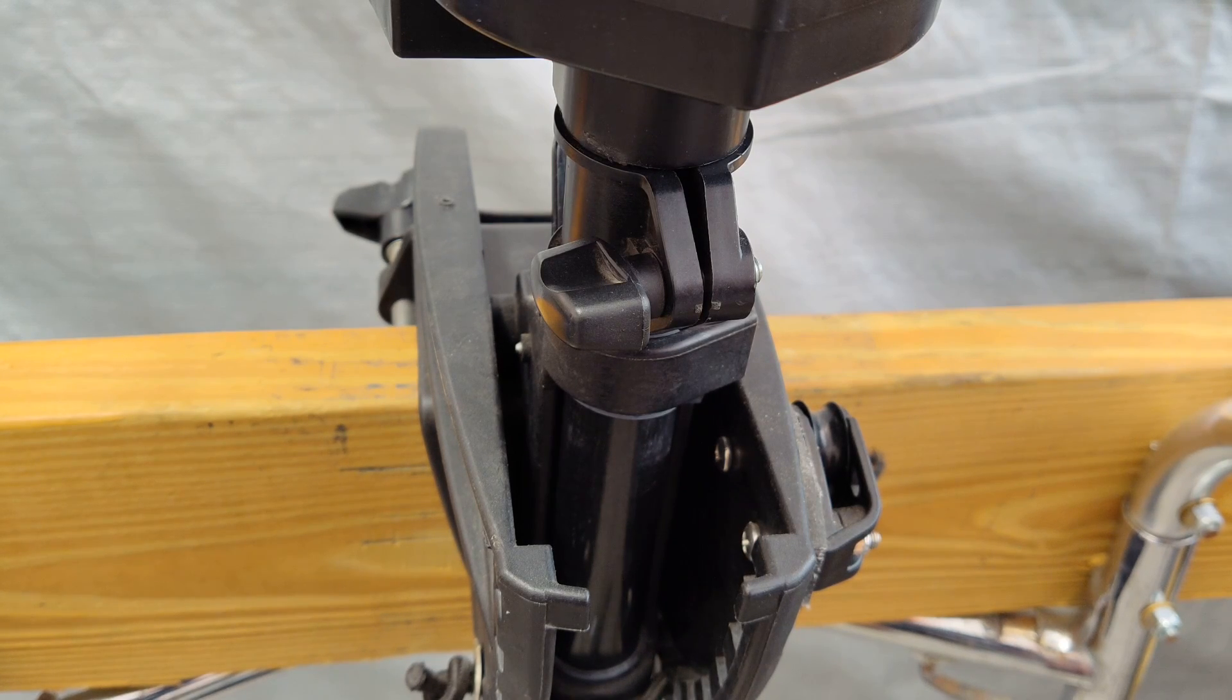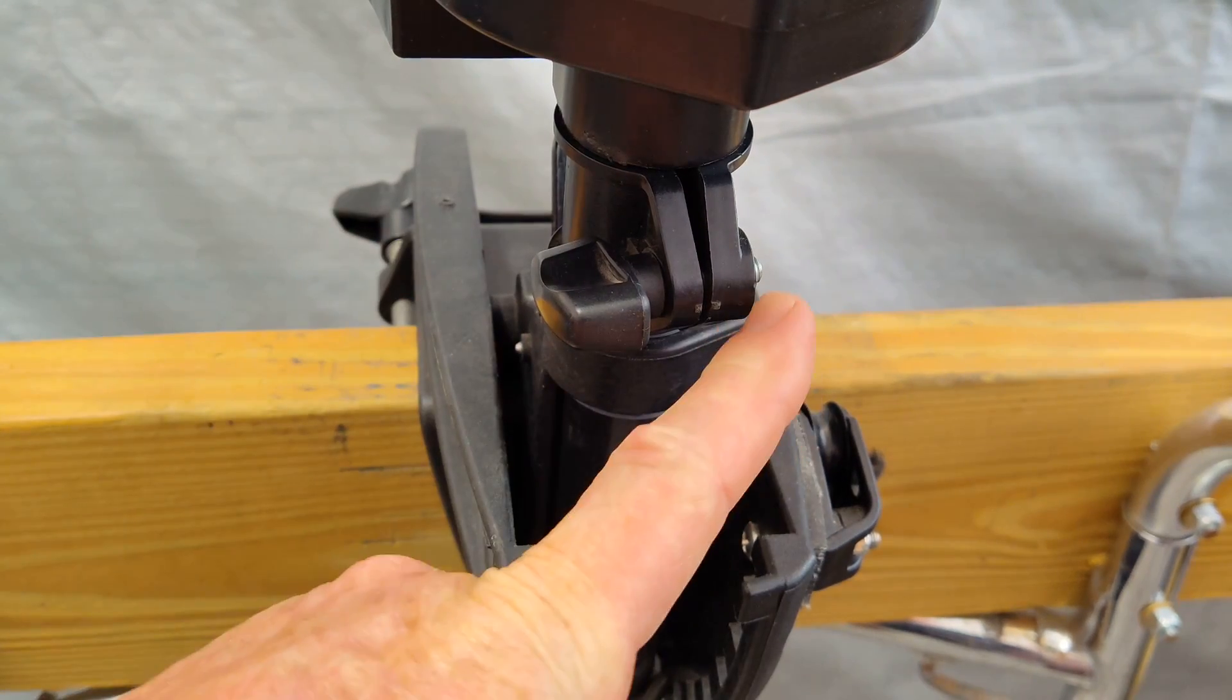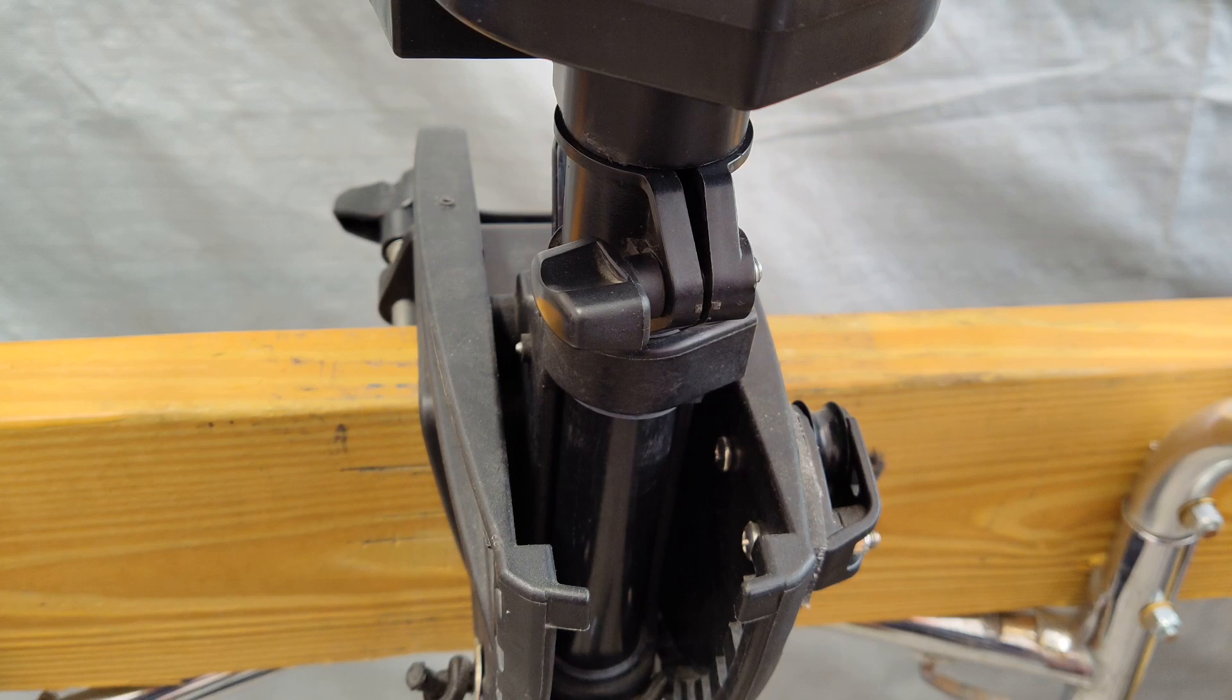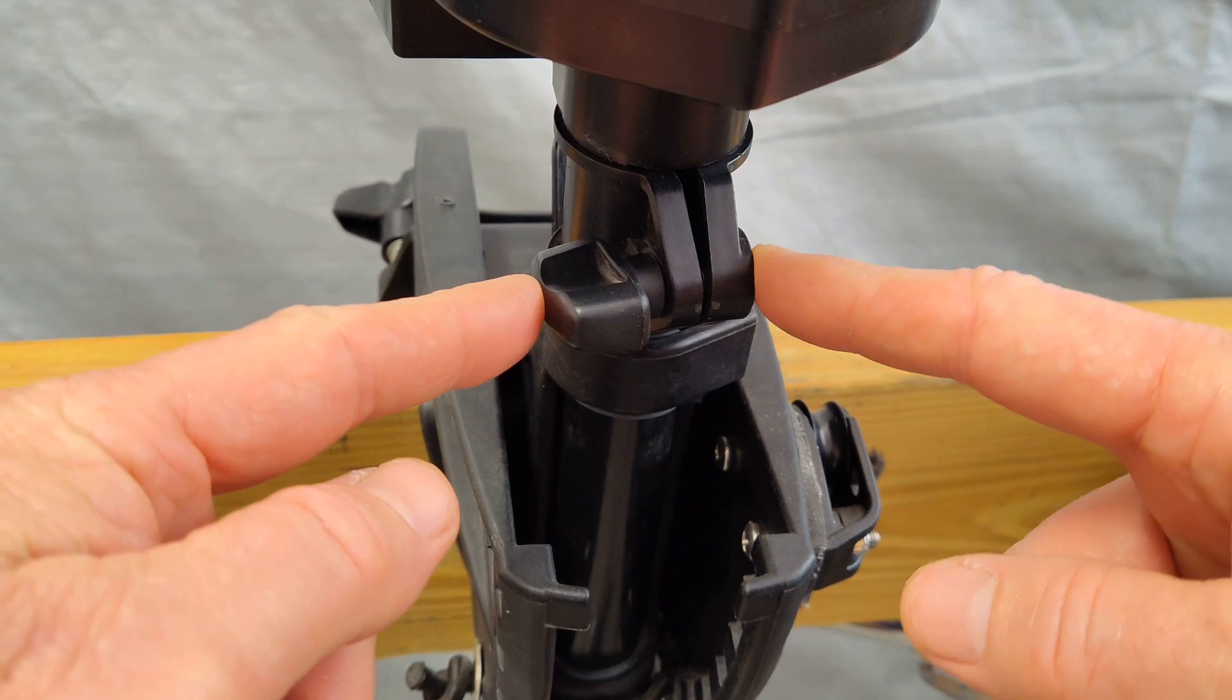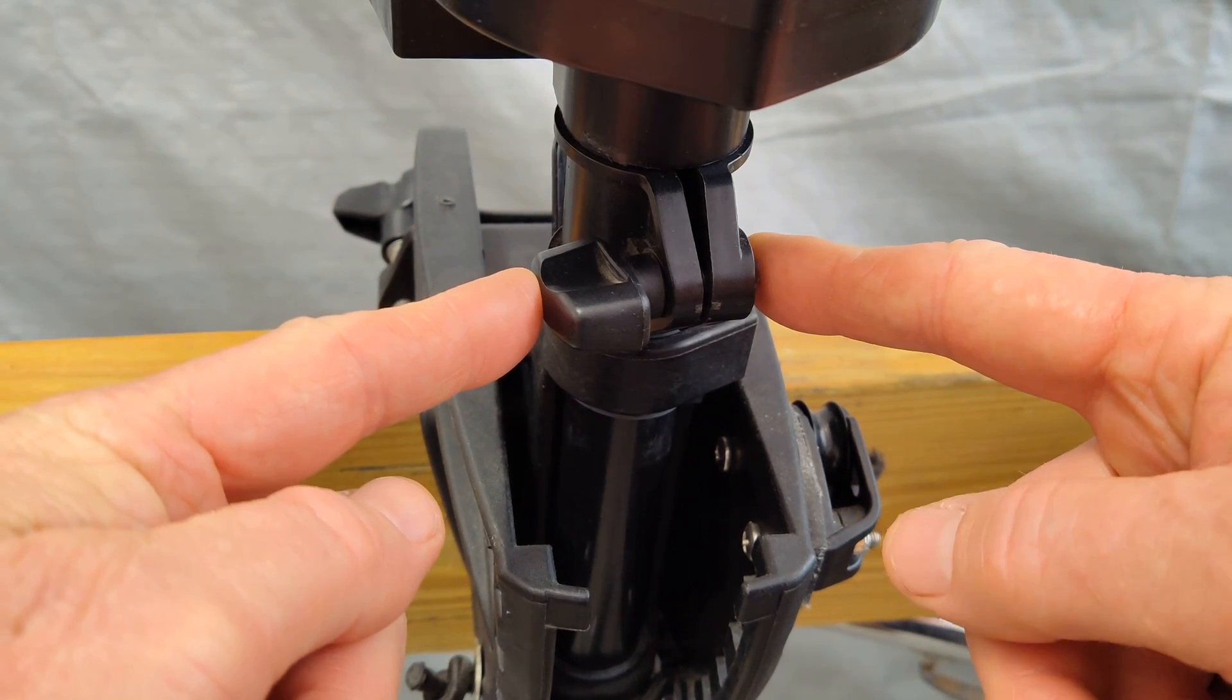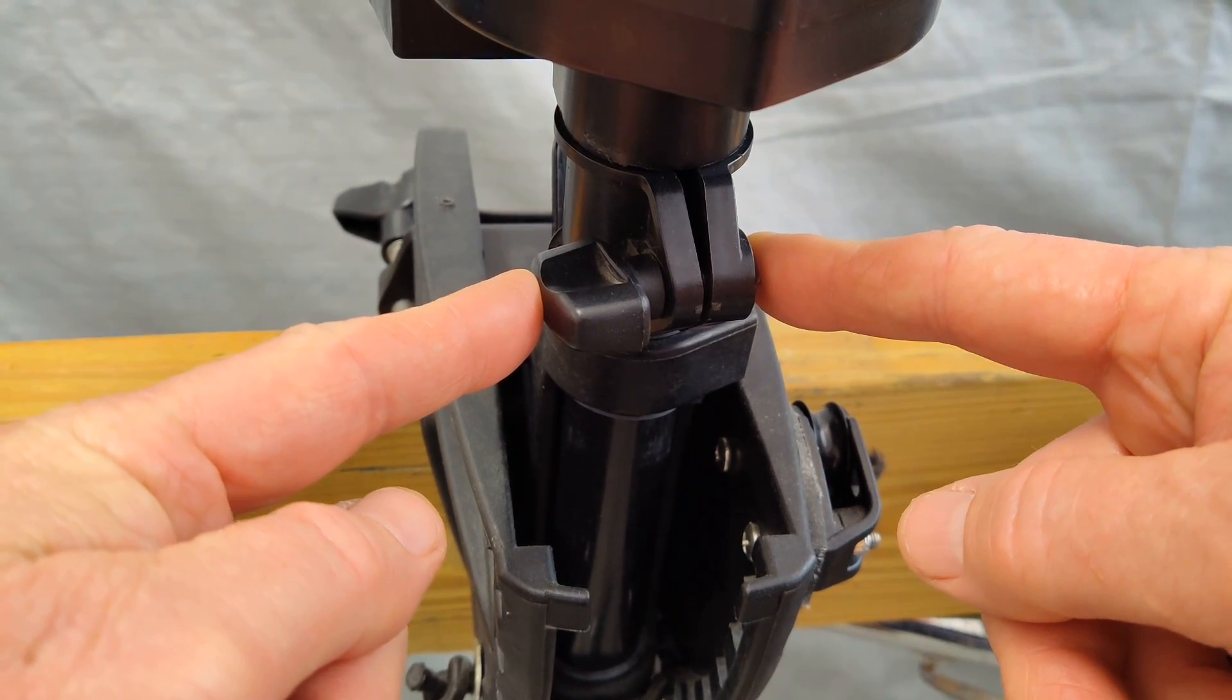This is a view of the stock depth collar for a Minn Kota trolling motor mounting bracket. It has the thumb screw here and inside here is a little nut, so by loosening and tightening this collar that sets the depth of the shaft and the prop. What I'm going to do with my setup is completely remove this, add my all thread through here, and then install a knob on either end.